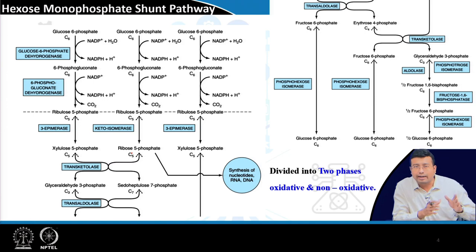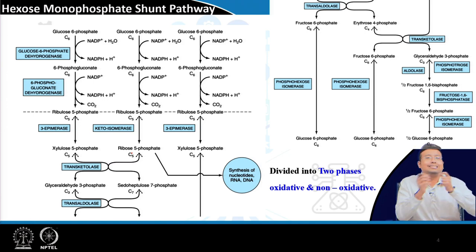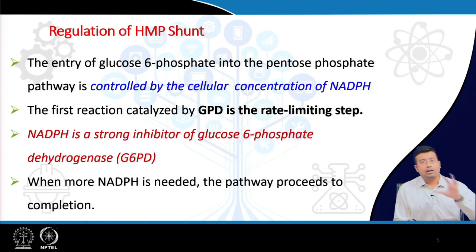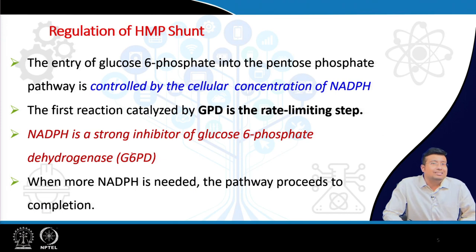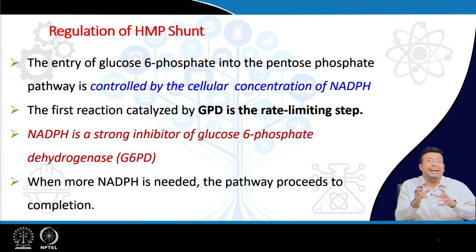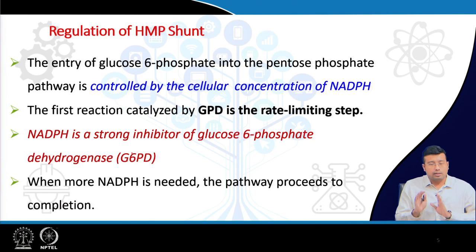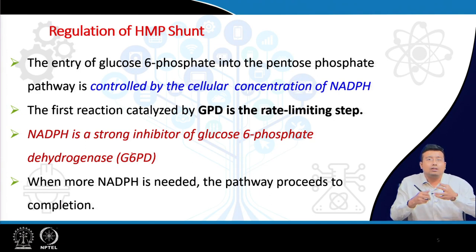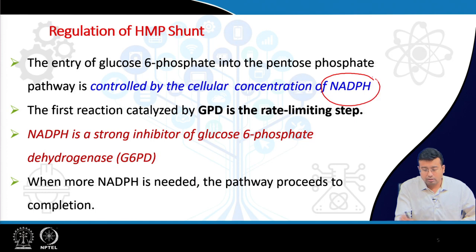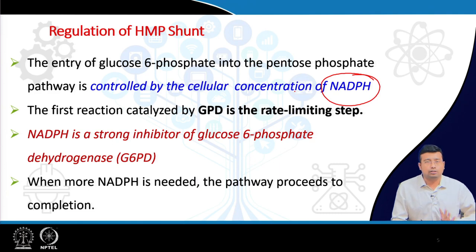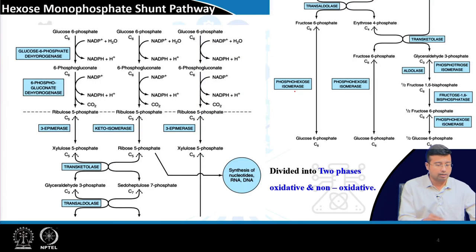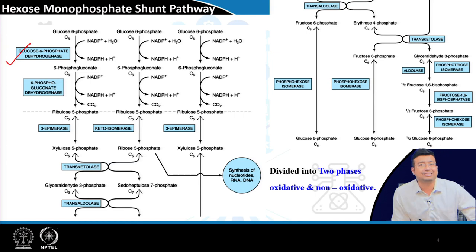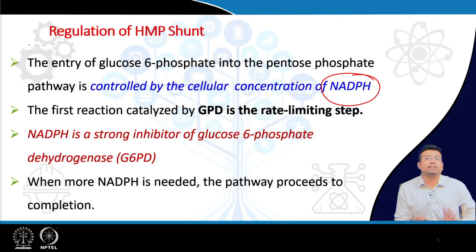If you cannot recall the pathway right now, it is a good time to pause this video, recap the earlier class, and then come back. The key question is how the rate of HMP shunt is controlled. The one and only answer is by the cellular concentration of NADPH. The reaction of glucose-6-phosphate dehydrogenase (G6PD) — the first step — is controlled.